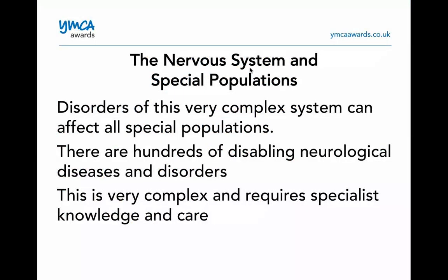For special populations with the nervous system: disorders of this very complex system can affect all special populations. There are hundreds of disabilities and neurological diseases and disorders. This requires specialised knowledge and care — you should have more training before dealing with anyone from a special population background. When dealing with anything to do with the brain and nervous system, it's going to affect people in different ways, especially someone who hasn't got very good control of their body system — exercise can help them activate their bodies a little bit more.